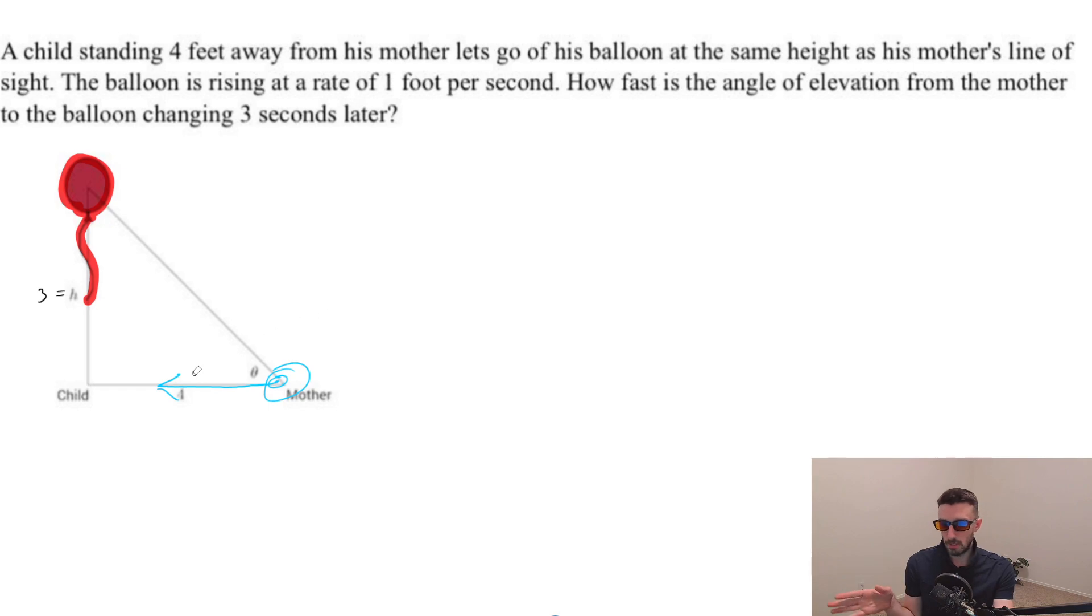But whenever you're doing related rates problems, you need to start off with some sort of equation that relates all your variables. So in this case, you would do tangent of theta equals h over four. Then you take the derivative of both sides with respect to time. So that would be secant squared theta d theta dt equals one-fourth dh dt.